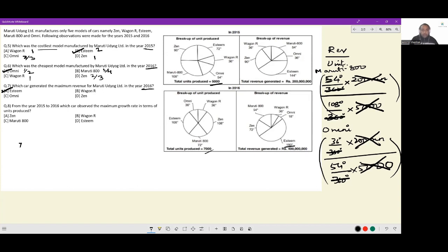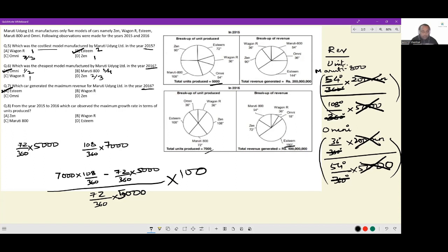Let's say we are doing it for Esteem. So 72 by 360 into 5000 was the initial number. Final number was 108 by 360 into 7000. So the fraction that we would be dealing with is 7000 into 108 by 360 minus 72 by 360 into 5000, whole thing divided by 72 divided by 360 into 5000 into 100. This is the growth rate for Esteem.